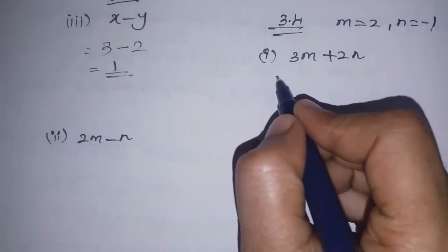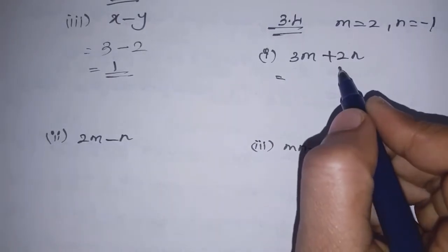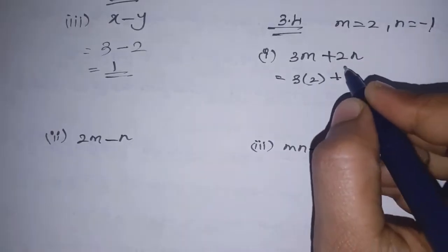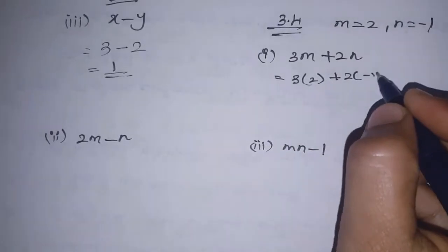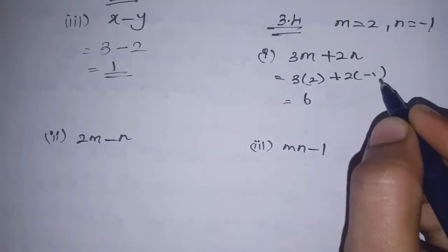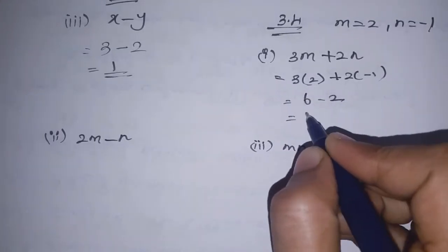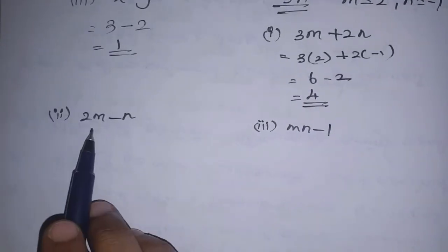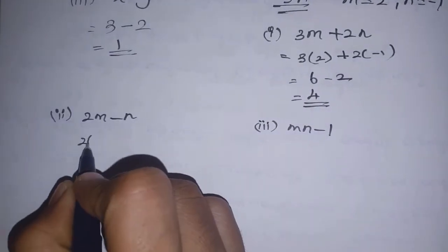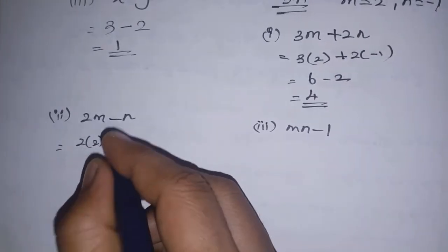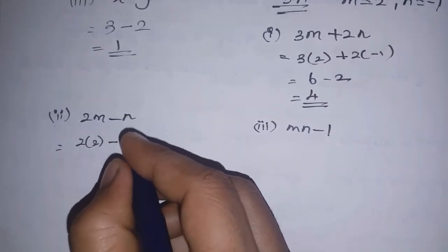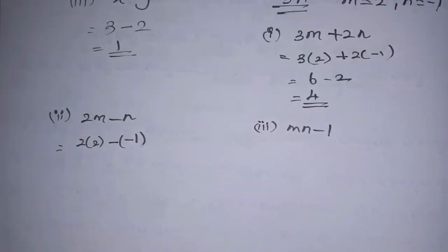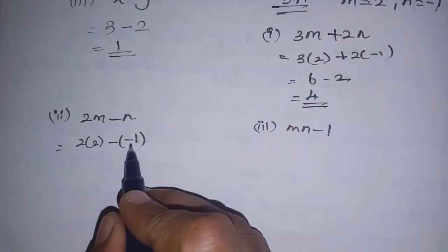m is equal to 2, n is equal to minus 1. First subdivision is 3m plus 2n. Substituting: 3 into 2 plus 2 into minus 1. Since we have a minus value, we put it in brackets.